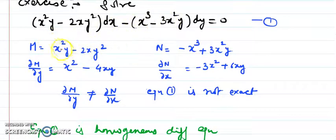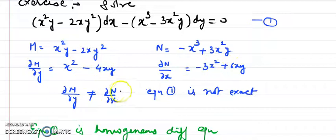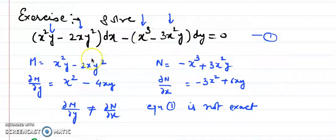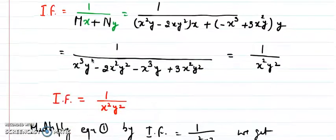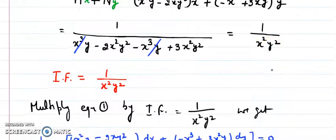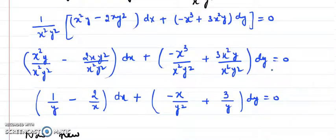For the second example, M equals x²y − 2xy² and N equals −x³ + 3x²y. Differentiating M with respect to y gives x² − 4xy, and N with respect to x gives −3x² + 6xy. These are not equal, so it is not exact. Checking homogeneity: all four terms have power 3 (e.g., x²y = power 3, xy² = power 3, x³ = power 3, x²y = power 3), so it is homogeneous. Applying the integrating factor formula and simplifying gives 1/(x²y²) as the integrating factor.